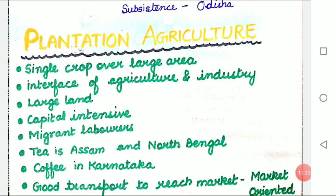Tea plantations, coffee plantations of Karnataka, rubber plantations, etc., are part of plantation agriculture.